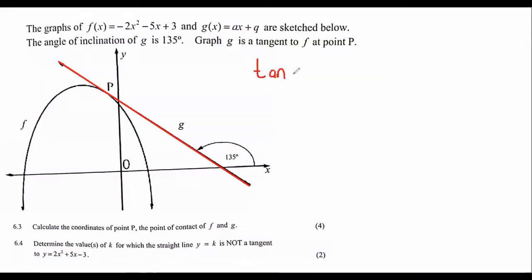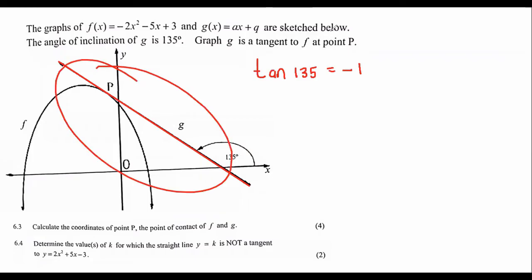If you can't remember this or haven't done it before, just go look for my grade 11 videos on analytical geometry where we talk about angle of inclination. To cut everything short, if you say tan of 135 on your calculator, that is going to give you negative one. So what that means is that this line has a gradient of negative one.